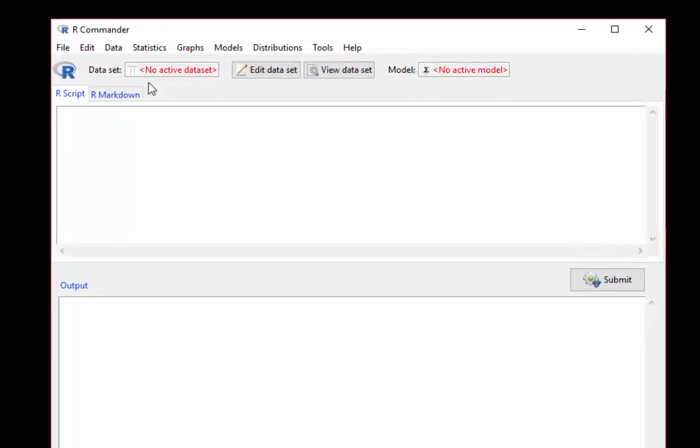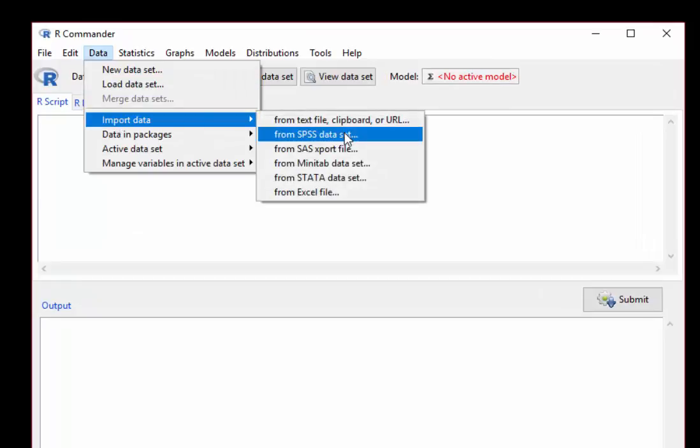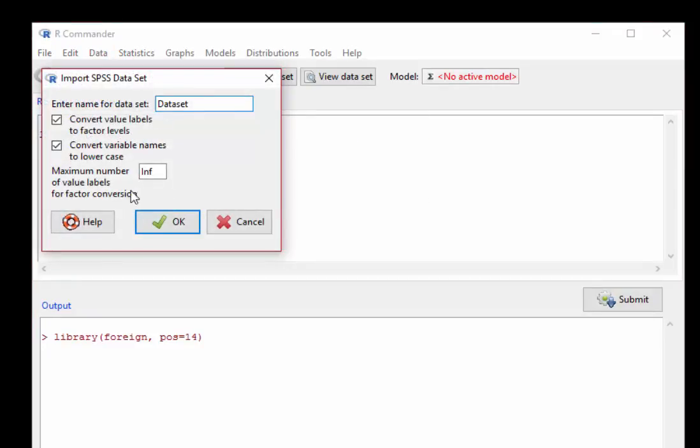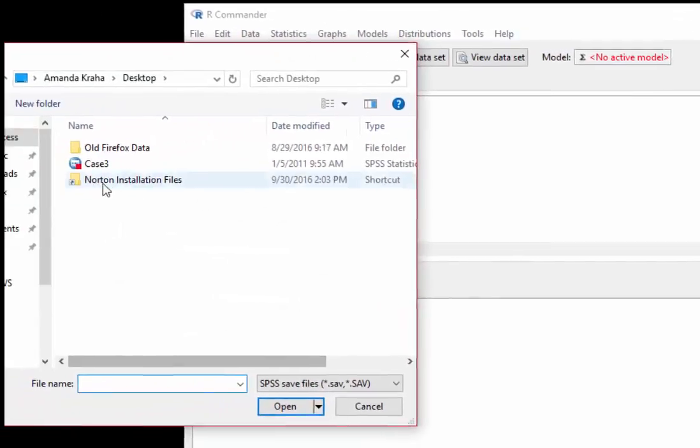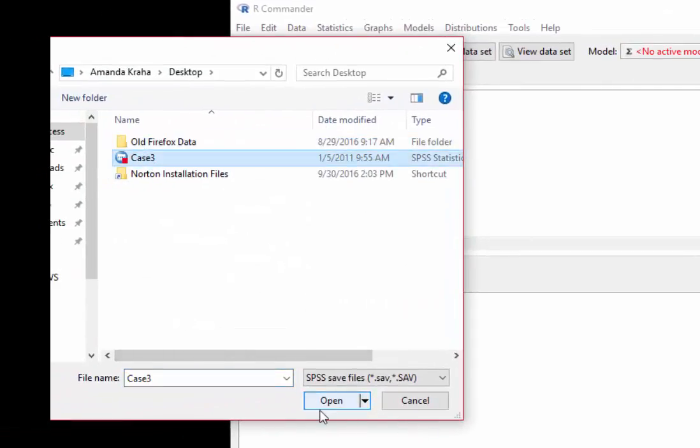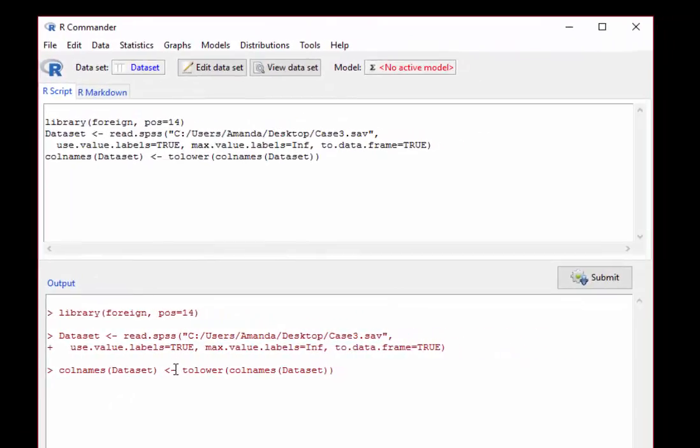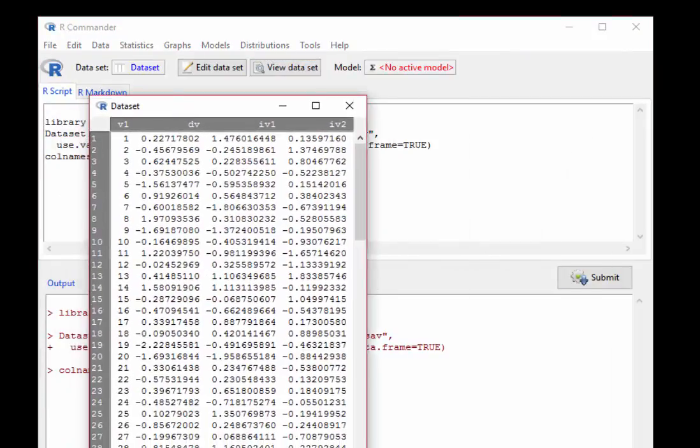From here you need to load the data set. So again, data, import data from SPSS. You can change these if you want, I'm just gonna leave it alone. I'm gonna open case 3, this is just a sample data set that I have. Click on view data set and you can see here some information about the data set.